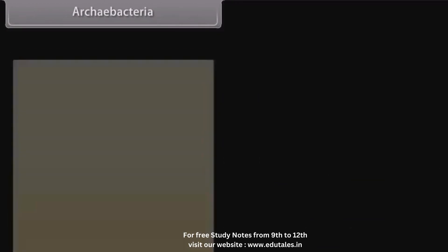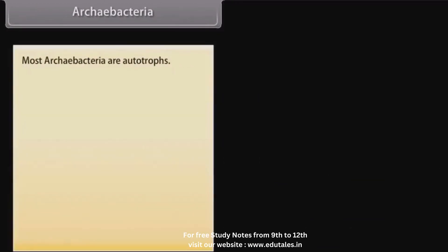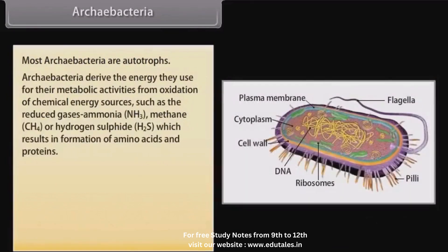Most Archaebacteria are autotrophs. Archaebacteria derive the energy they use for their metabolic activities from oxidation of chemical energy sources, such as reduced gaseous ammonia (NH₃), methane (CH₄), or hydrogen sulfide (H₂S), which results in the formation of amino acids and proteins.